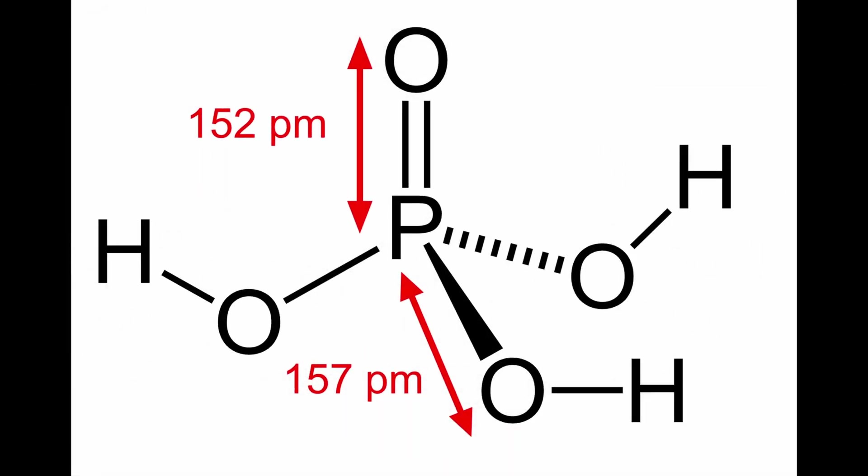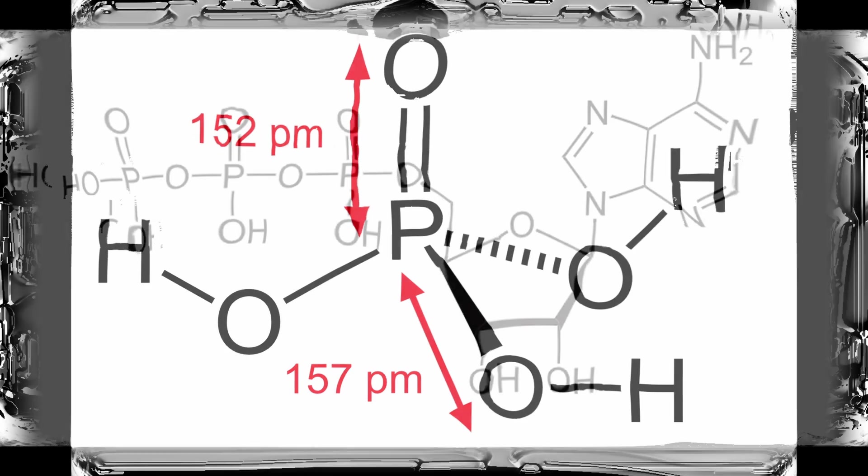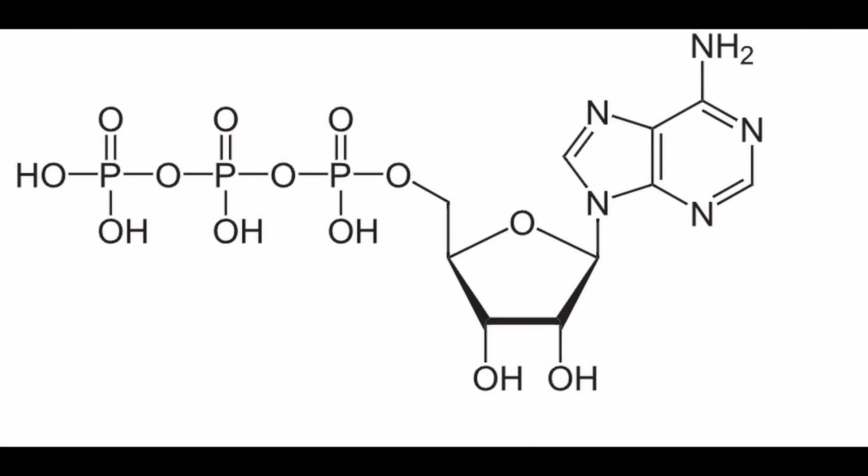So the phosphate ion is triply negative and when connecting by discharging a doubly negative ion, only part of the charge is lost. Terrestrial life takes advantage of this by using ATP.